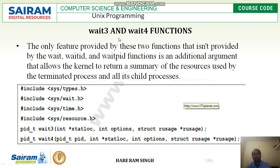The next two functions are wait3 and wait4. The only feature provided by these two functions that is not provided by wait or waitpid is an additional argument that allows the kernel to return a summary of resources used by the terminated process and all its child processes. When wait3 or wait4 are called, a summary of the resources used will also be provided. The prototype is: pid_t wait3(int *statloc, int options, struct rusage *rusage). The rusage argument provides usage information of resources used by the process.